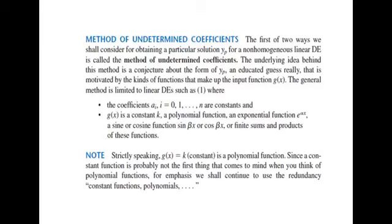We apply an initial guess, and this initial guess depends on the type of function on the right-hand side — it is really an educated guess motivated by the kind of function that makes up the input function g(x). After identifying the right-hand side, we assume a form for YP, substitute it into the given differential equation, and then compare the coefficients to determine the undetermined constants.